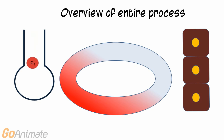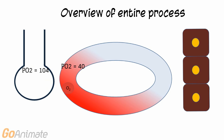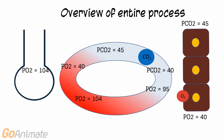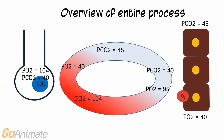To summarize the full cycle: oxygen enters the lungs where the alveolar PO2 is 104 mmHg and the deoxygenated blood PO2 is 40 mmHg, so oxygen diffuses into the blood raising the blood PO2 to 104 mmHg. The oxygenated blood PO2 drops to 95 mmHg and oxygen diffuses into the tissues with a PO2 of 40 mmHg, causing the deoxygenated blood PO2 to drop to 40 mmHg. Carbon dioxide produced by the tissues raises the tissue PCO2 to 45 mmHg; since the oxygenated blood entering the tissues has a PCO2 of 40 mmHg, carbon dioxide diffuses into the blood, raising the blood PCO2 to 45 mmHg. Carbon dioxide then travels to the lungs and diffuses into the alveoli, which have a PCO2 of 40 mmHg, and carbon dioxide is expelled from the lungs during exhalation.